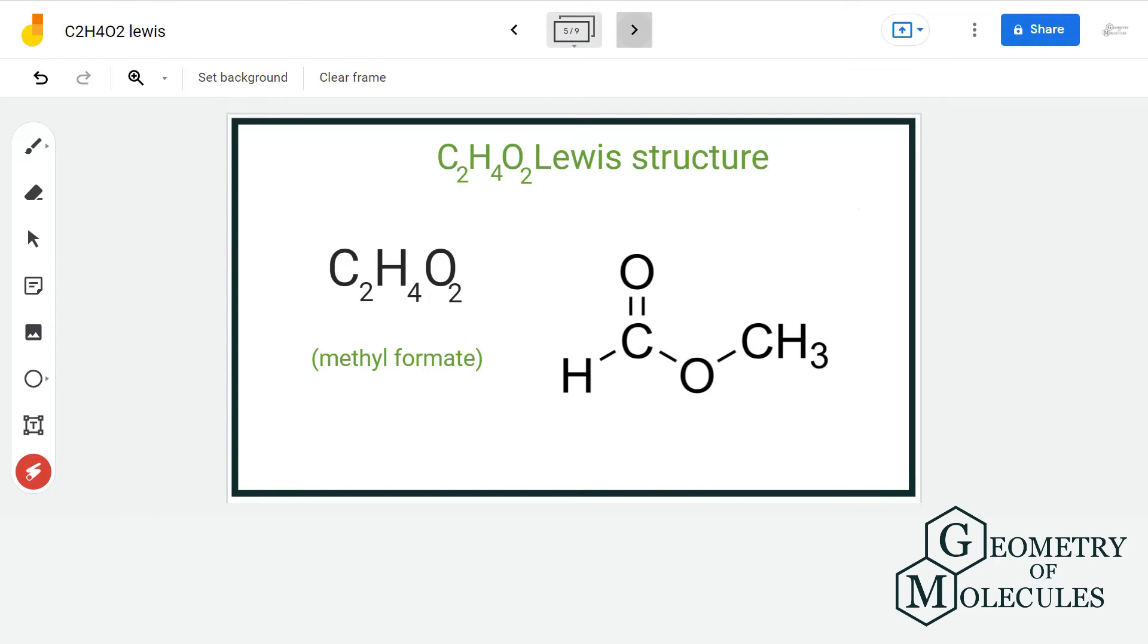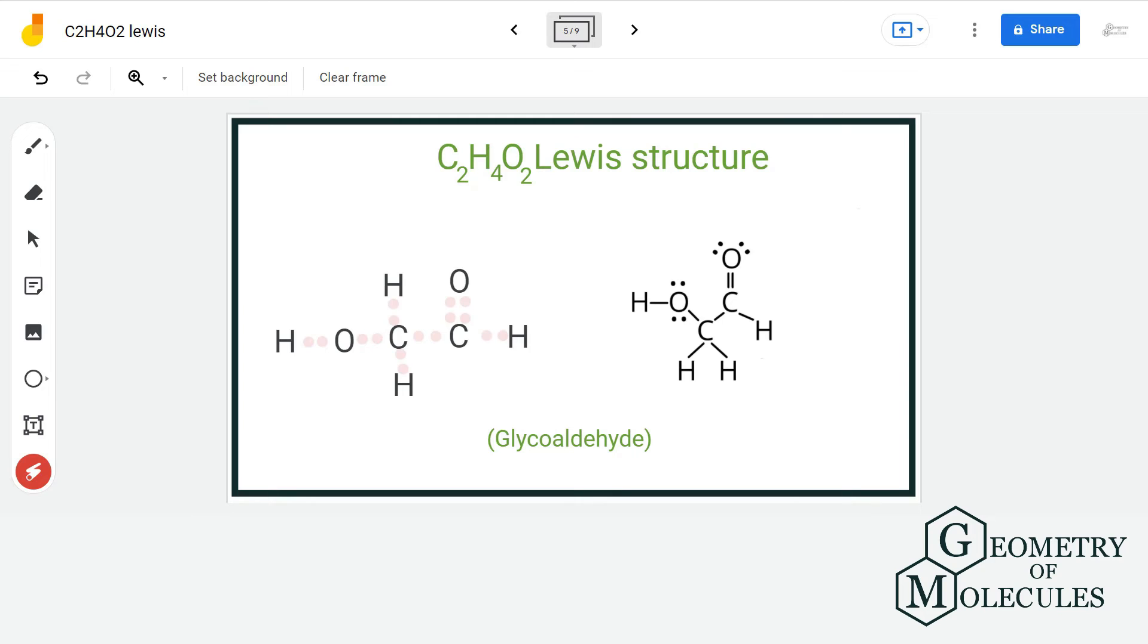The next isomer is aldehyde that contains a functional group with structure CHO. This is the Lewis structure of glycolaldehyde and this is its structure.